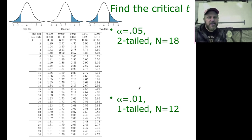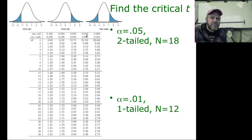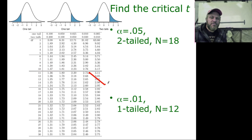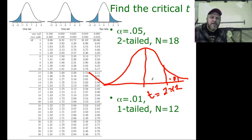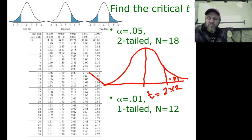Alpha equals 0.01, one-tailed, n equals 12. We look at the one-tailed column for 0.01. N equals 12 means 11 degrees of freedom, so that's 2.72. For a positive one-tailed test, we put 2.72 as our T value, giving 0.01 in that tail. If you used negative 2.72 on the other side as well, alpha would be 0.02 — which nobody really wants.